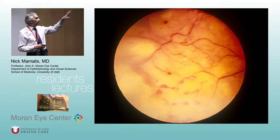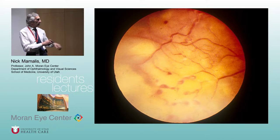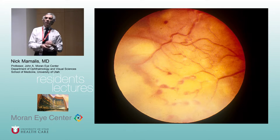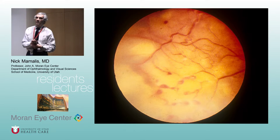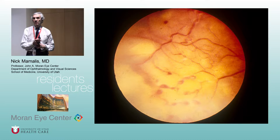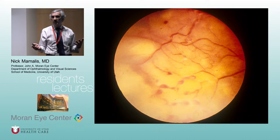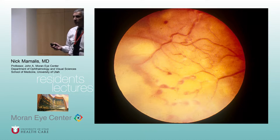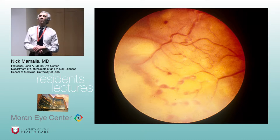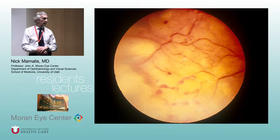Here the retina is bulging forward, out of focus because of exudate underneath. Look at these telangiectatic vessels. Coats disease is unilateral. Age compared to retinoblastoma — retinoblastoma is most commonly age two or less; Coats disease patients are around eight to ten years old. And it shows up more in males, for unknown reasons. So: unilateral, male, a little older than retinoblastoma.